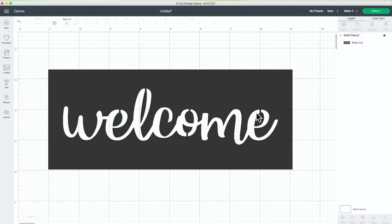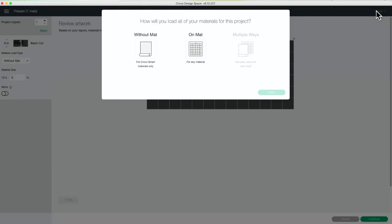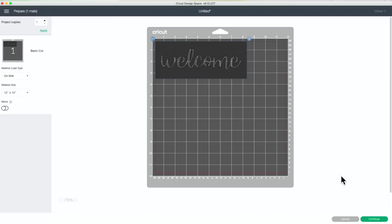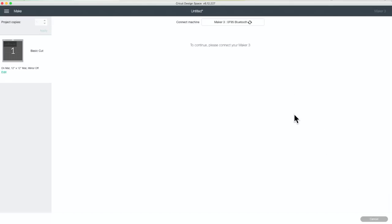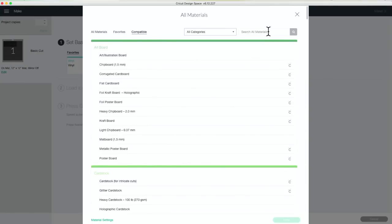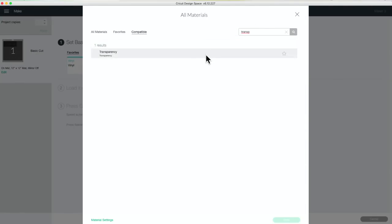We are finished creating this design here in Design Space. So now all I need to do is press make it. I'm going to select that I will be cutting this material on my mat. I'm going to press continue, connect to my machine, and then I'll select the material setting, the transparency material setting, by pressing browse all materials and typing in transparency or just part of the word. I'm going to select that material setting and press done.